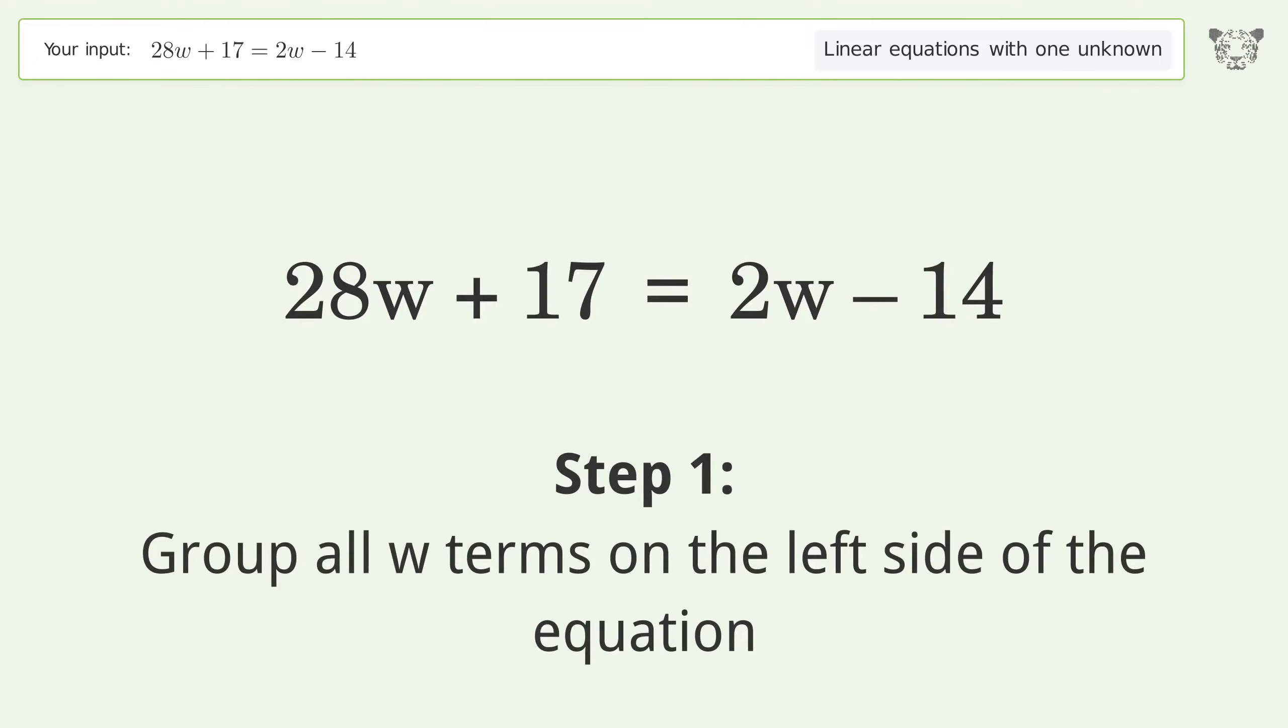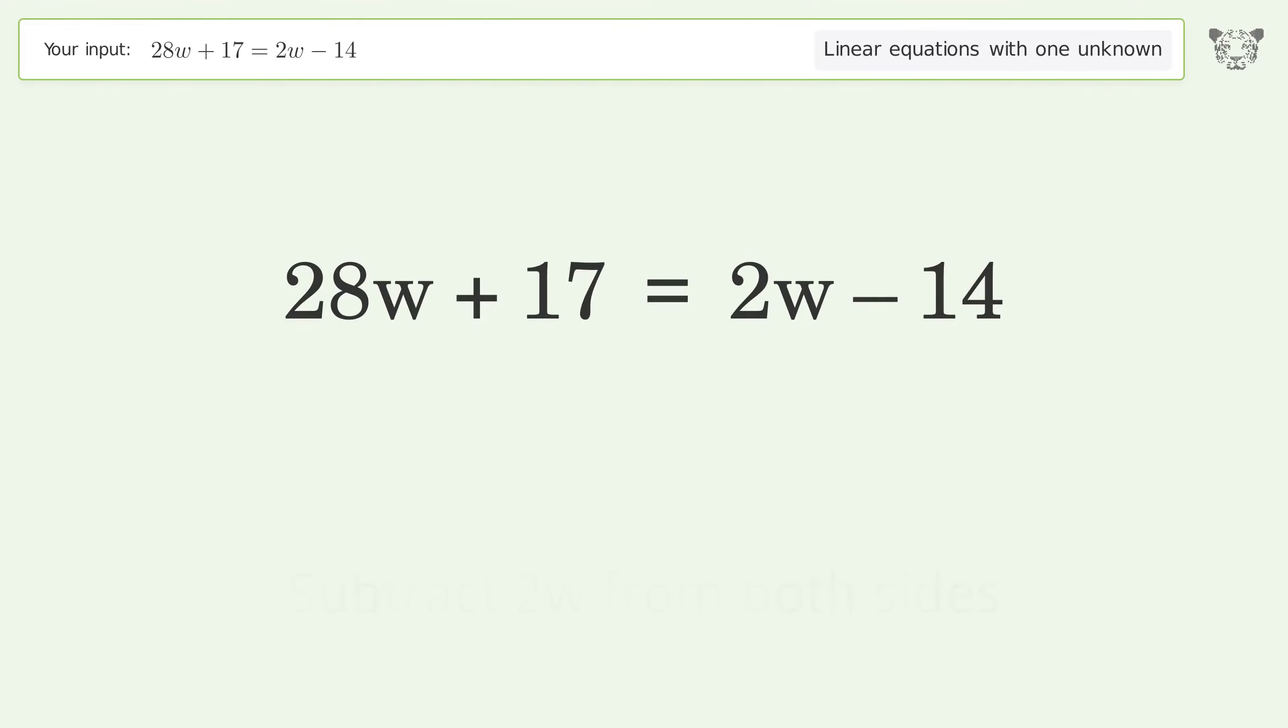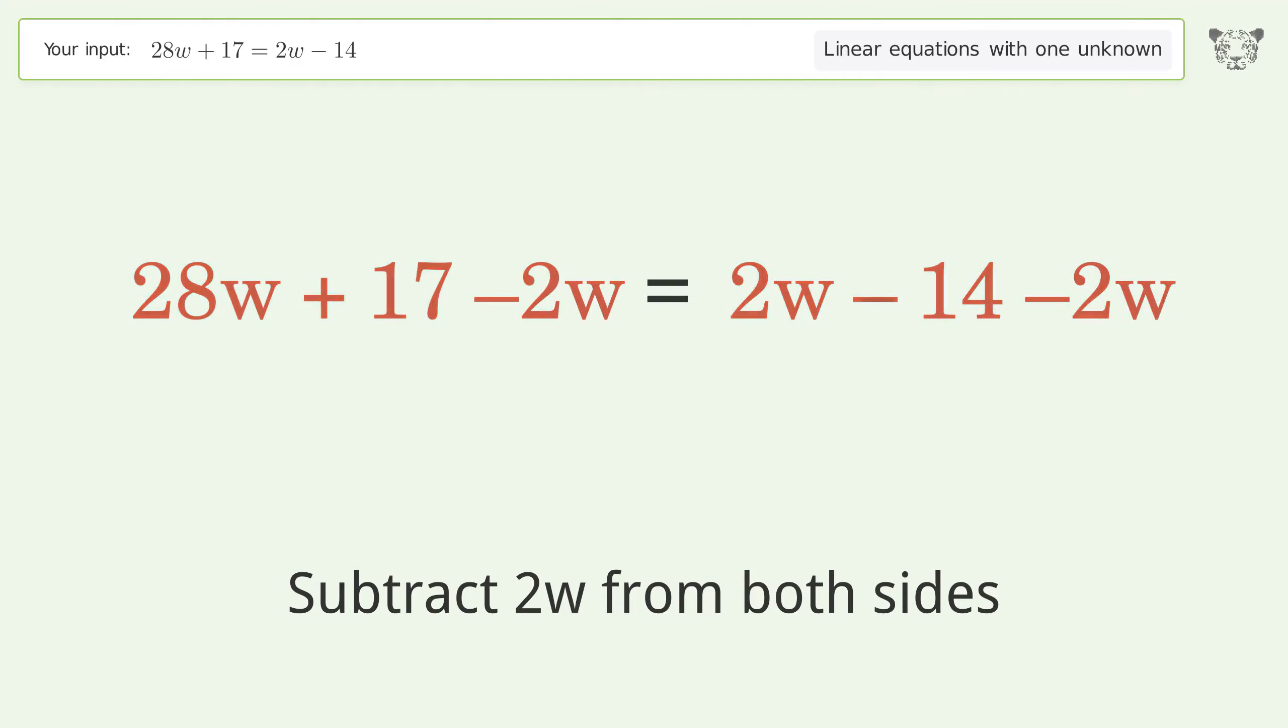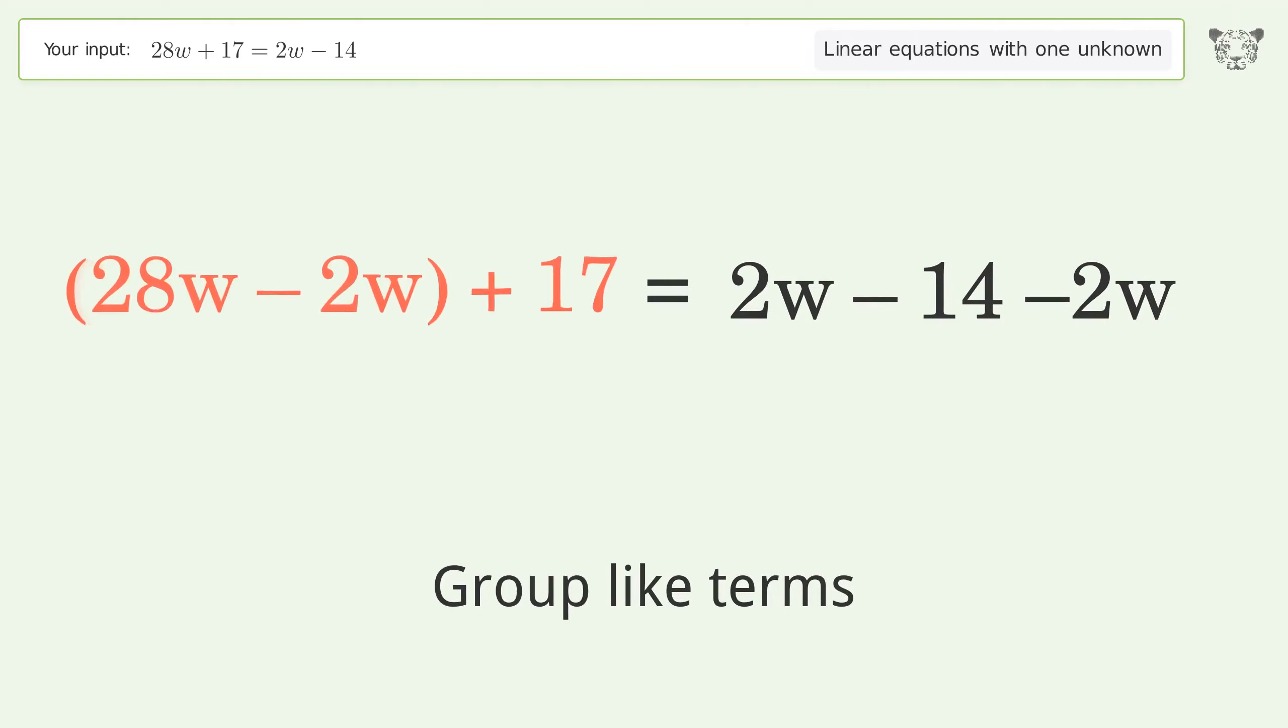Group all w terms on the left side of the equation. Subtract 2w from both sides. Group like terms and simplify the arithmetic.